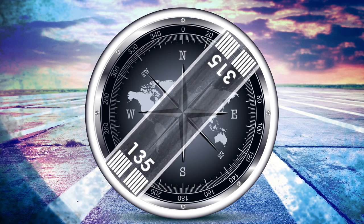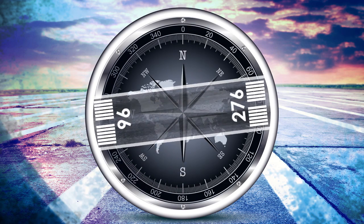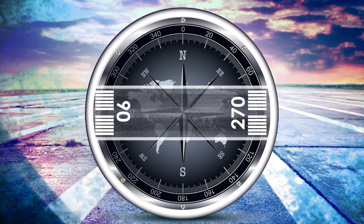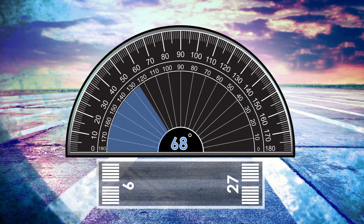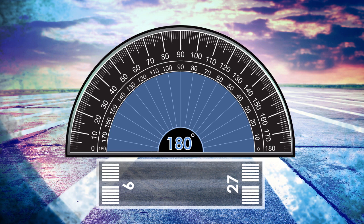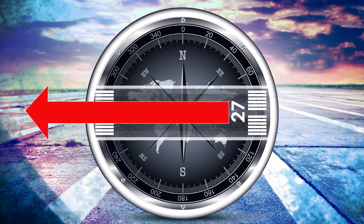For example, this runway in our animation has an outbound magnetic heading of 90 degrees, which faces east. Drop the last number — a zero — and you are left with nine. The other end of nine is going to be 180 degrees in the opposite direction. So you drop the zero from 180 and add 18 to nine. The runway designator is 27, which faces west at 270 degrees.